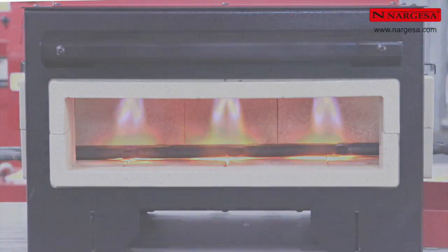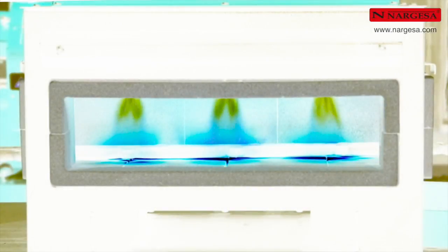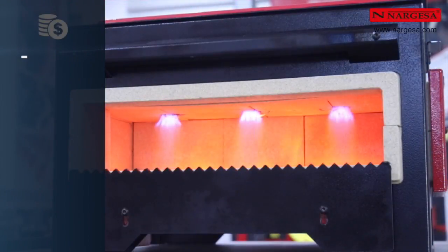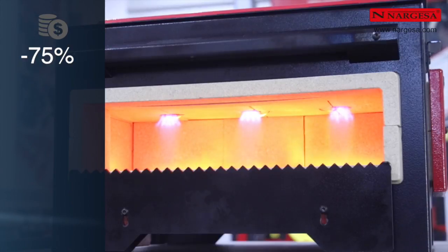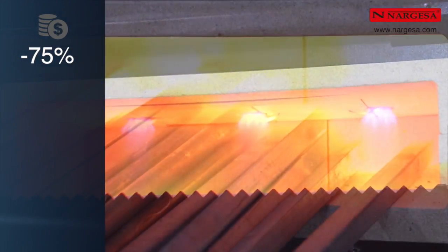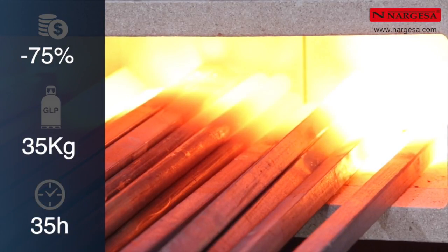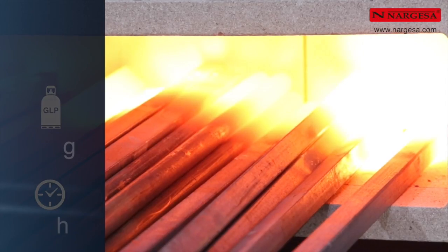L'économie d'énergie est un des principaux aspects dont nous avons tenu compte pour la conception de ces fours. La consommation des fours Nargesa a été réduite de 75%, ce qui veut dire qu'ils consomment un quart du combustible utilisé pour les autres fours de ce type. Une seule bouteille de gaz propane de 35 kg permet au four H3 un fonctionnement de 35 heures avec ses trois brûleurs allumés.